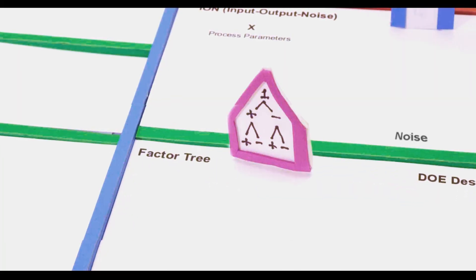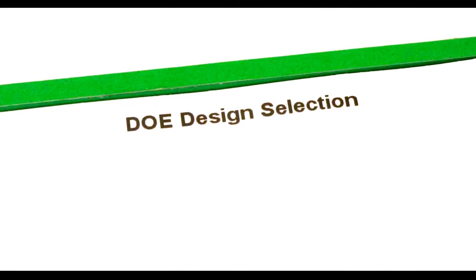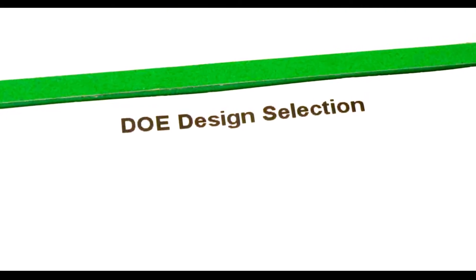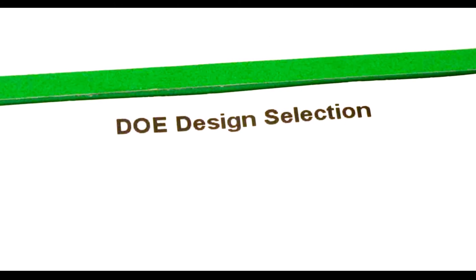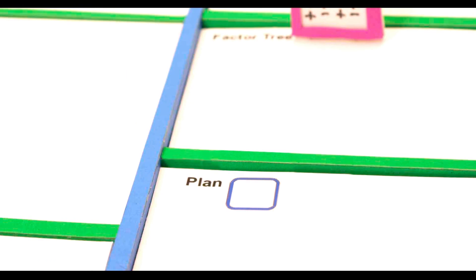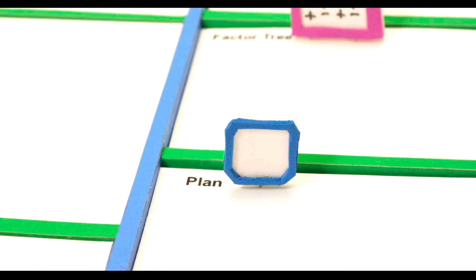If it is a DOE, then this will show whether this is a fractional full factorial or a Plackett-Burman, etc. The plan section is the mini project management of the experiment.